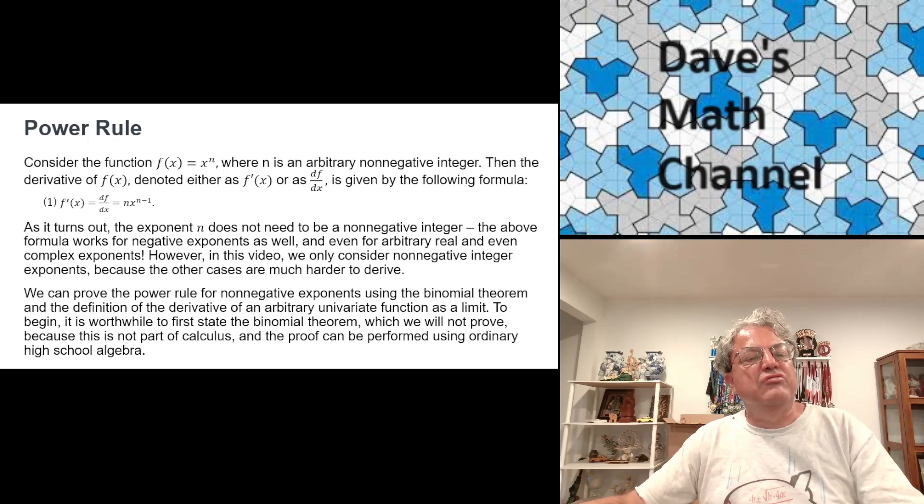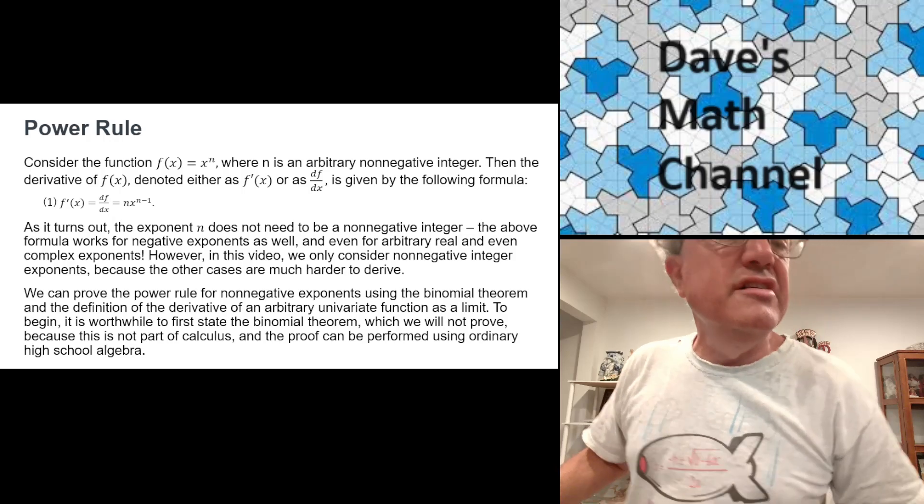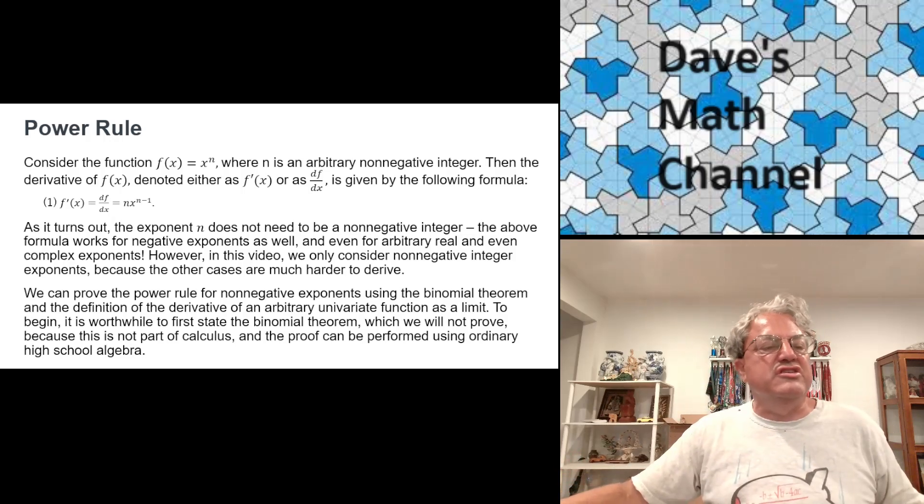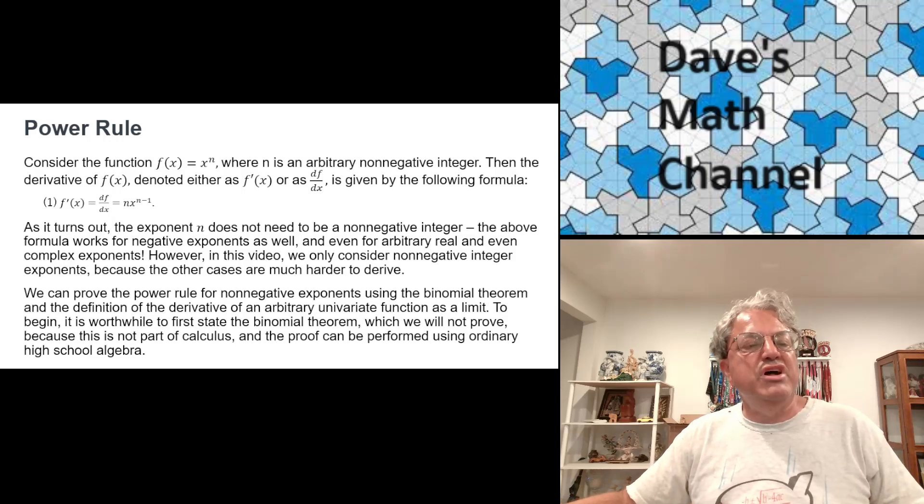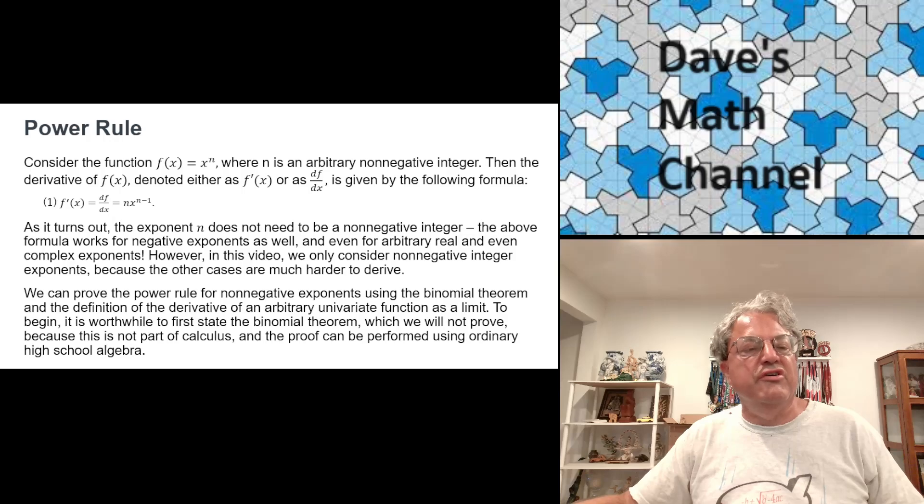What does the power rule say? It says that f prime of x, which we can also write as df dx, is equal to n times x to the n minus first power, where f of x is x to the n. I want to derive this formula, which I call formula 1 here. The way we derive it, we first use a rule called the binomial theorem.